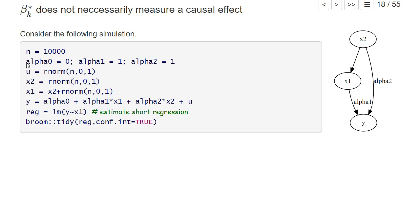I specify some coefficients alpha0, alpha1, alpha2. I have a variable u that's an error term that's standard normal distributed, so normal distribution with mean zero and standard deviation one. I have a variable x2 that also follows the standard normal distribution. I have an explanatory variable x1 that depends positively on x2 and also on some standard normally distributed factors.